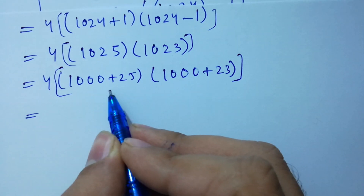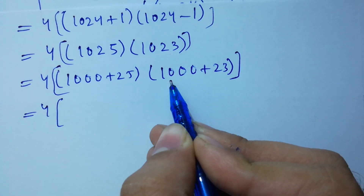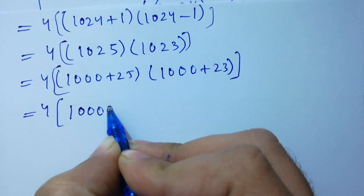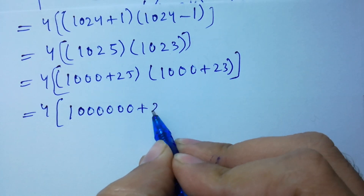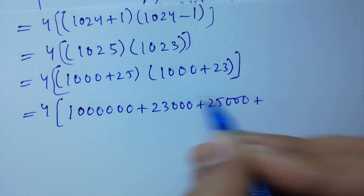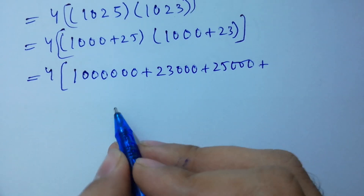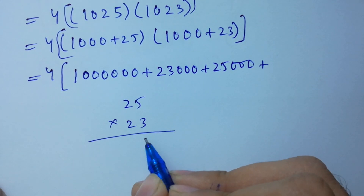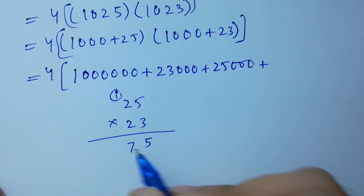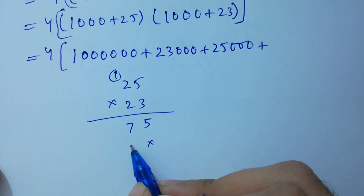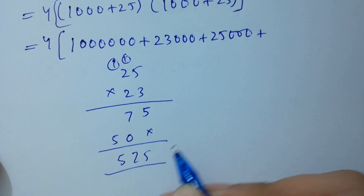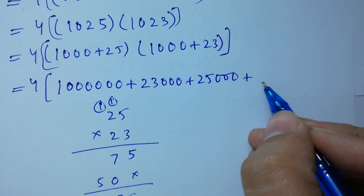I am going to multiply both. 1000 times 1000 gives 1,000,000. Then we have plus 23,000 plus 25,000 plus 25 times 23. Solving 25 times 23: 5 times 3 is 15, write 5 carry 1; 3 times 2 is 6, plus 1 is 7; 2 times 5 is 10, write 0 carry 1; 2 times 2 is 4, plus 1 is 5. We get 575. So 25 times 23 equals 575.